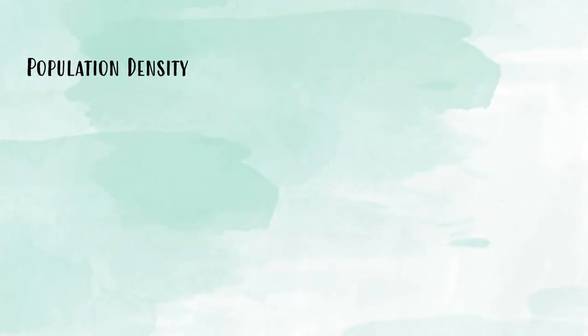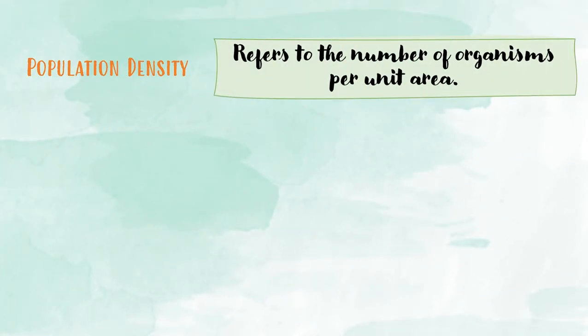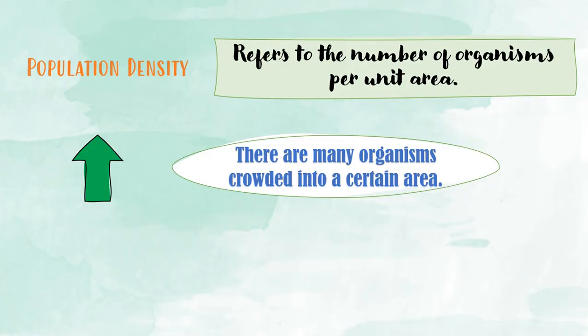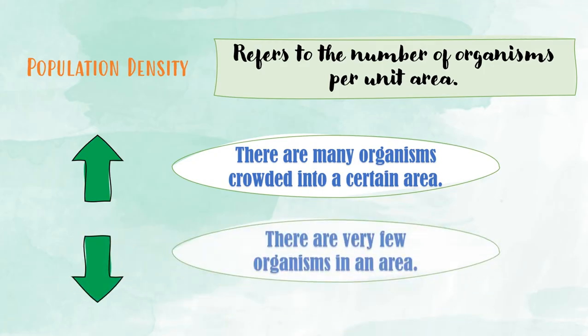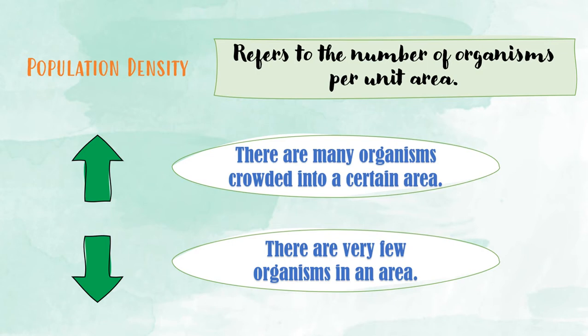What is population density? It refers to the number of organisms per unit area. If population density is very high, there are many organisms crowded into a certain area. If population density is low, it means only a few organisms are living in that particular area.